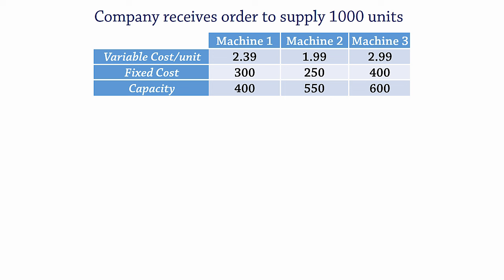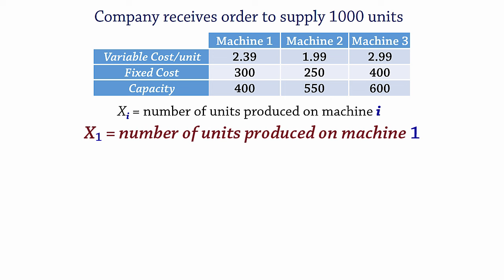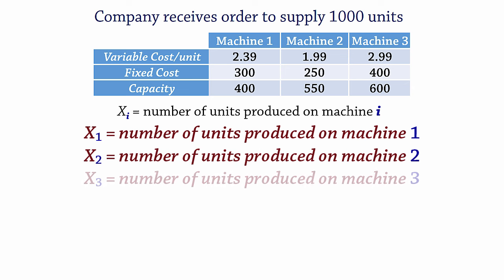So for the units produced we write, xi equals number of units produced on machine i. That is, x1 represents the units produced on machine 1, x2 for machine 2, and x3 for machine 3.